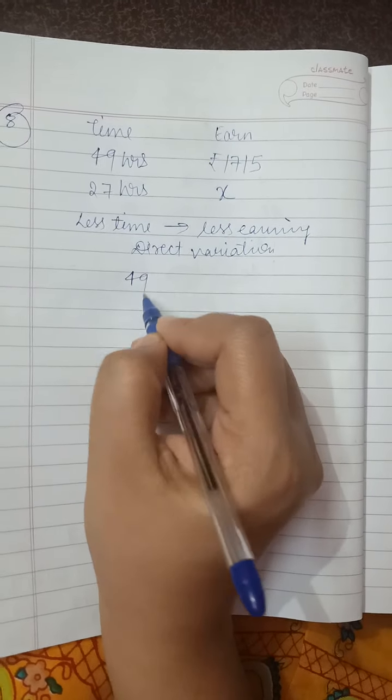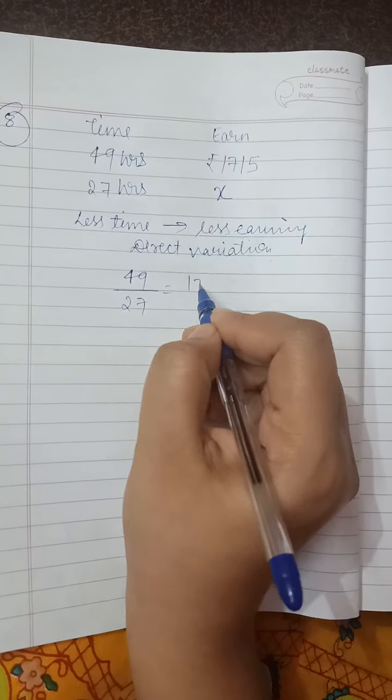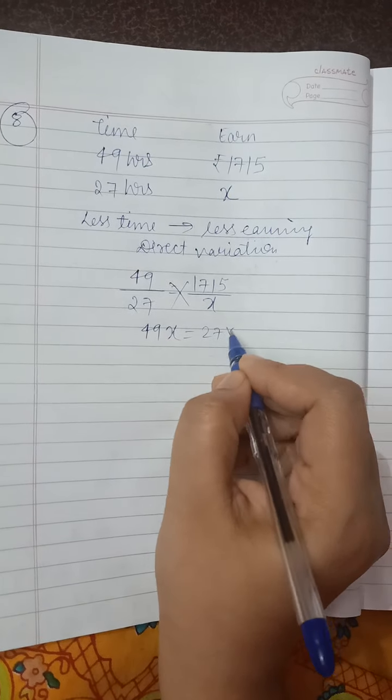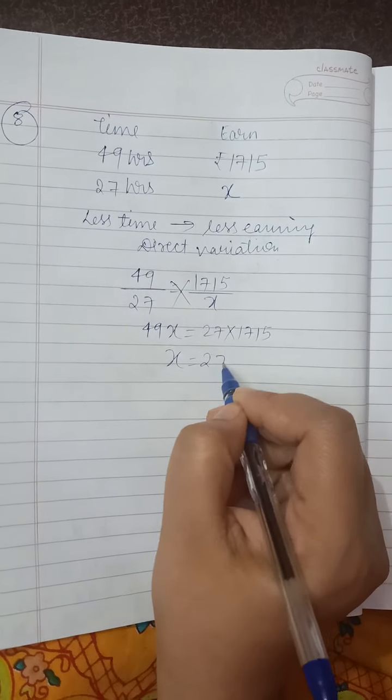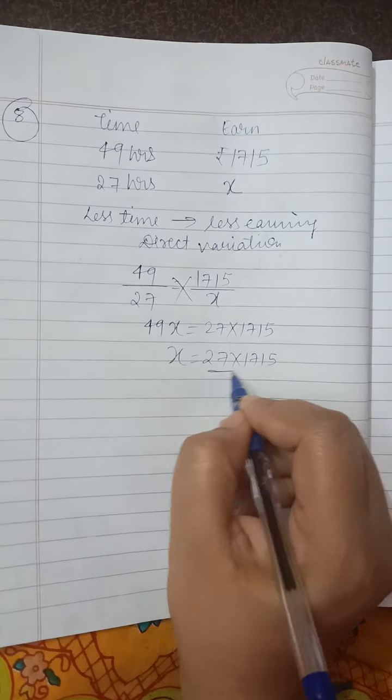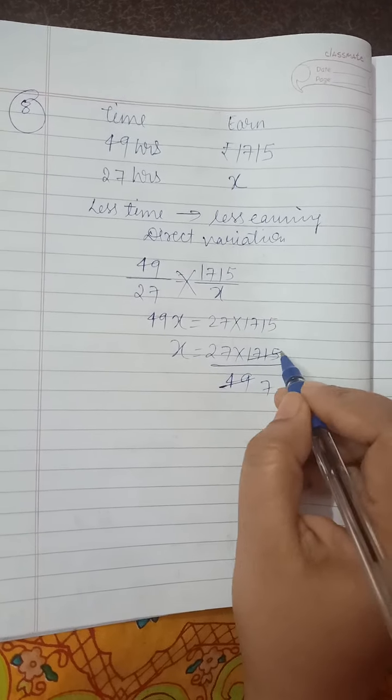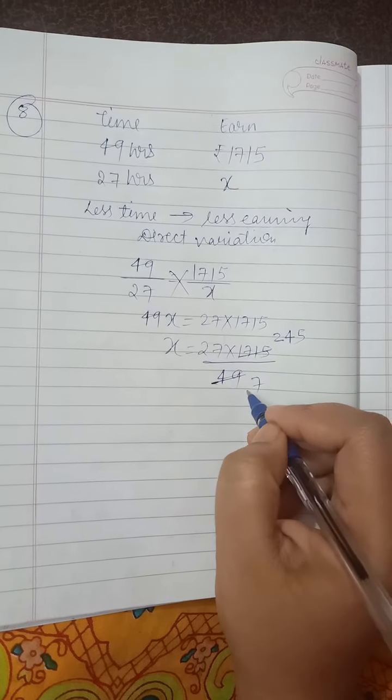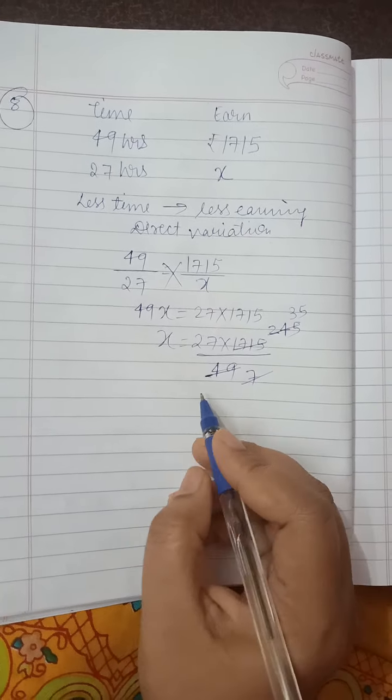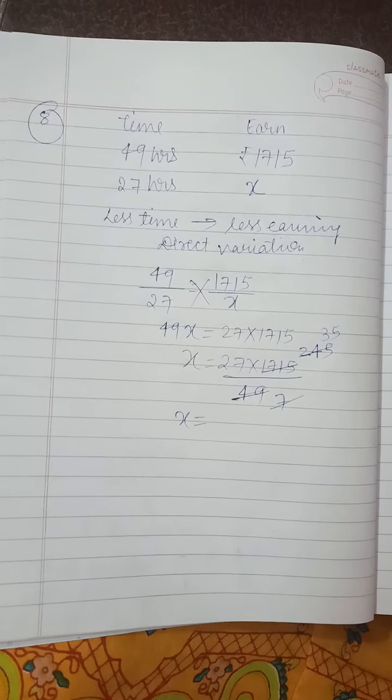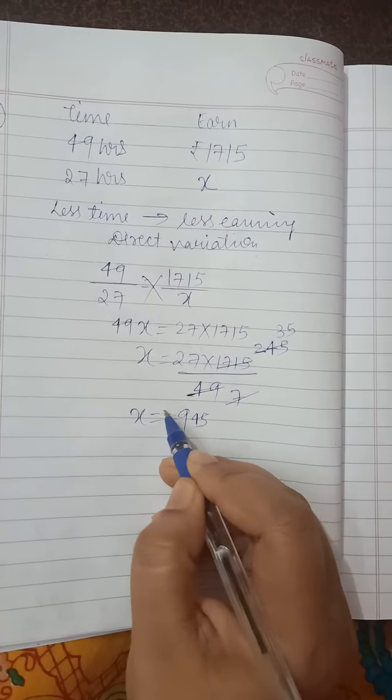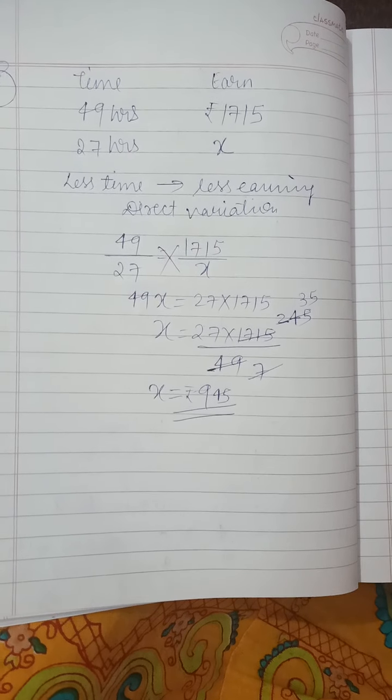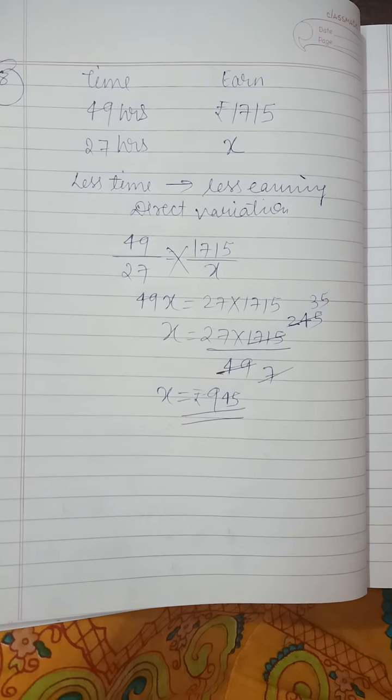Now write it as is. 49 by 27 equals 1750 upon x. By cross multiplication, 49x equals 27 into 1750. So x equals 27 into 1750 upon 49. Let's simplify. This is 27 into 35, so x equals 945. He will earn 945 rupees. I hope you can solve the other questions easily. If you still have confusion in any question, you can ask. Thank you.